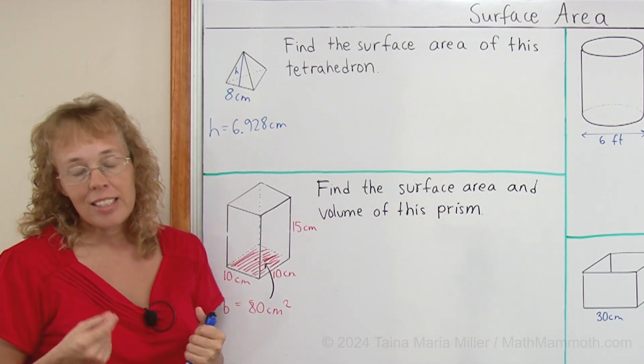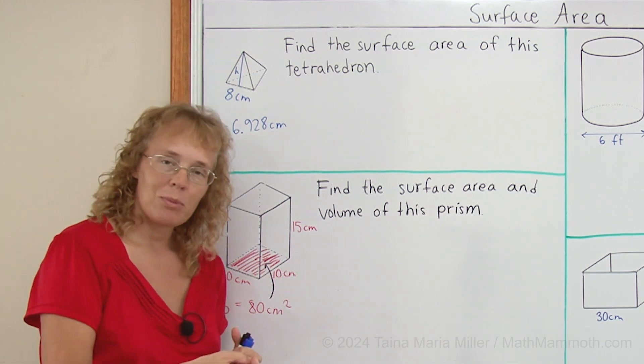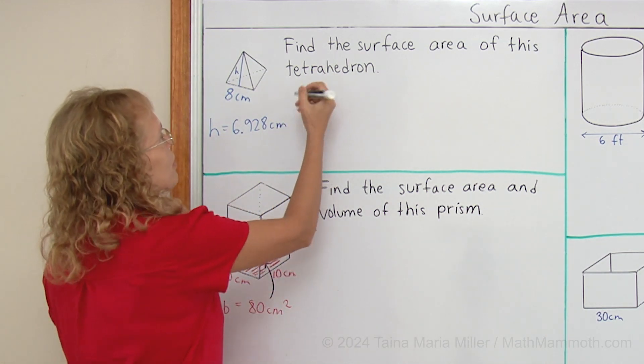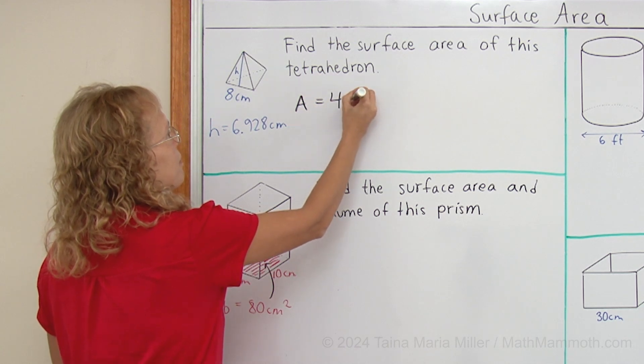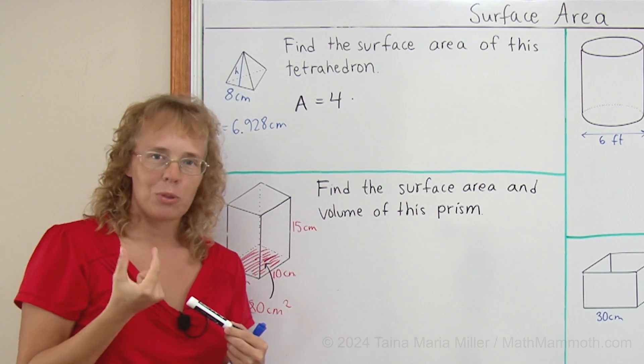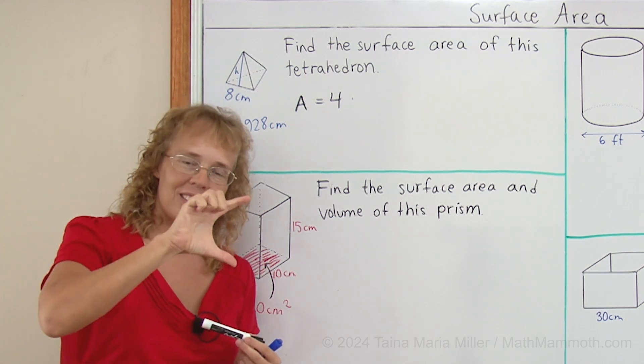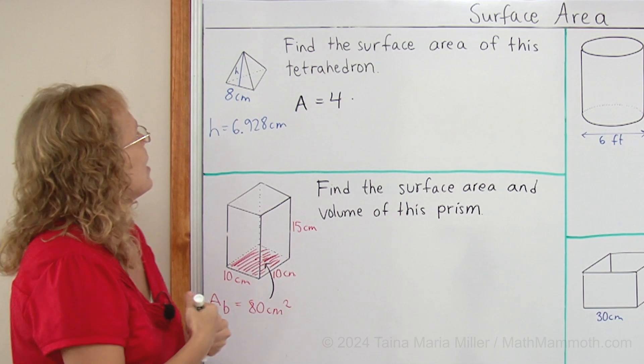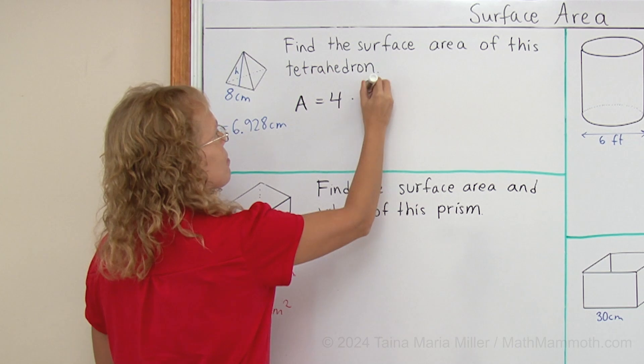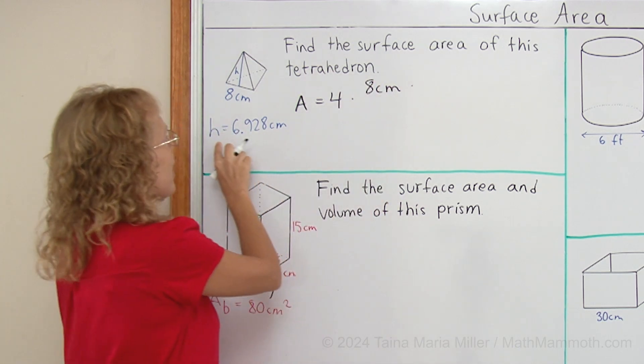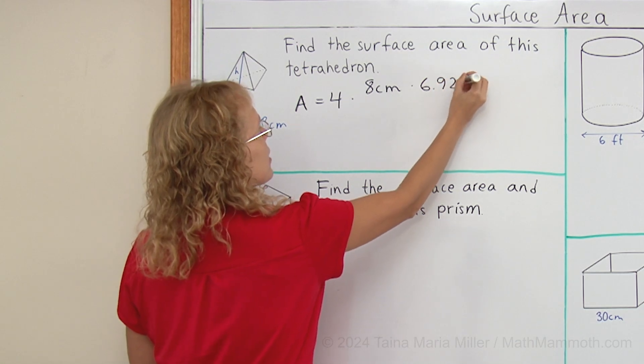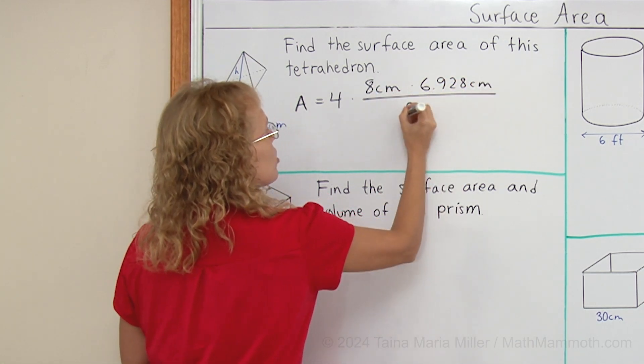And since the four triangles are identical, then we of course go four times the area of one triangle. So we would get area equals four times, and then the area of one triangle would be, as usual, base times height divided by 2. And the base and the height are given here in the problem. The base is 8 centimeters and the height is given here, 6.928 centimeters divided by 2.